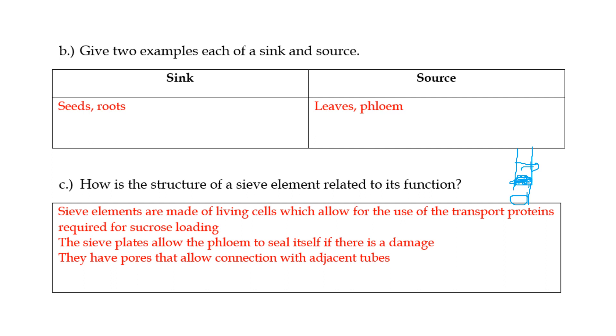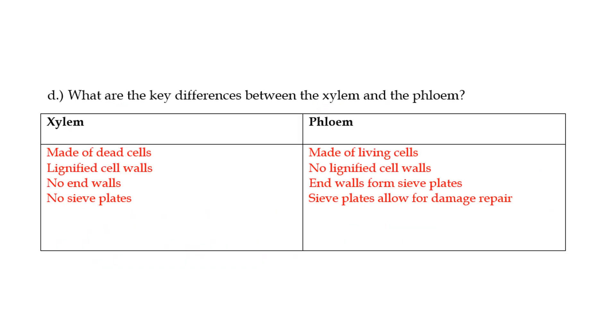They also have pores that allow connection with adjacent tubes in case there's a situation in one specific phloem sieve tube. What are the key differences between xylem and phloem? Xylem is made of dead cells. It has lignified cell walls. It doesn't have any end walls. And it doesn't have sieve plates. Whereas phloem has all of these things. And phloem doesn't have lignified cell walls. Meanwhile, xylem has it.